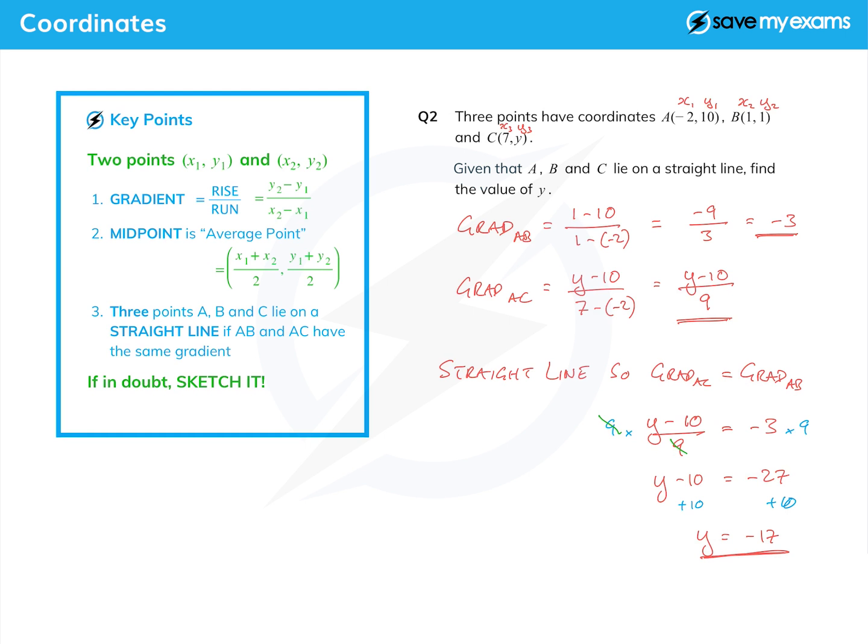So as I say, three things we can do: find the gradient, up over across, rise over run, difference in the y's over the difference in the x's. We can find the average point, otherwise known as the midpoint. And we can use the fact that A, B, and C lie on a straight line, and that's equivalent to saying AB and AC have the same gradient. I hope that helps.